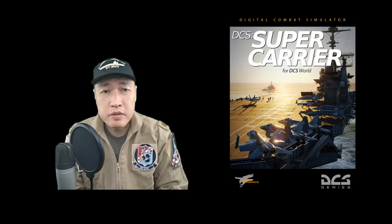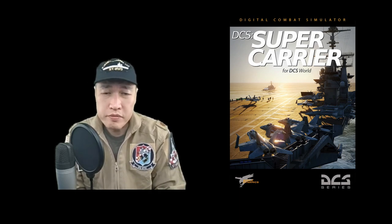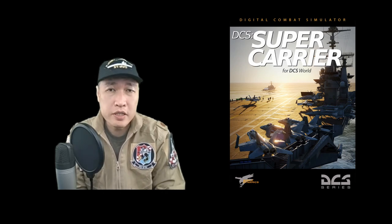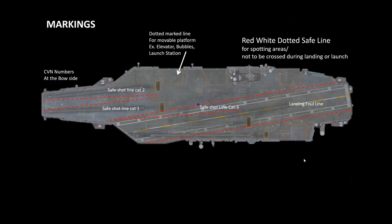In this video we're going to delve deeper into the module itself, learning about its systems and the super carrier. We'll focus on several key features of the super carrier related to the DCS Super Carrier module. We'll start with general guidelines — the markings. Starting from the bow area, there is a CVN number. I'm using CVN-72 Abraham Lincoln as an example, so there's a slightly faint '72' marking here.